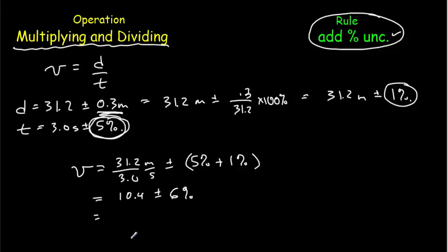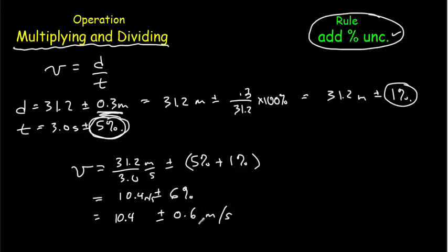We usually convert back to absolute uncertainties. So 6% of 10.4 is about 0.6. So we get 10.4 plus or minus 0.6 meters per second. Double-checking: we've got one significant digit on our uncertainty, and it's in the tenths decimal place, which is the same as the final digit in our value. So that would be our final answer for the speed.